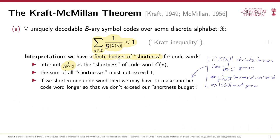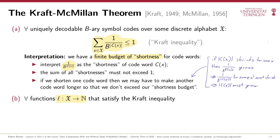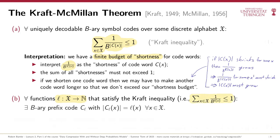Part B goes in the opposite direction. It starts from a function L that assigns target codeword lengths to each symbol in the alphabet. The statement is that as long as these target lengths satisfy the Kraft inequality, there exists a b-ary code whose codewords all have exactly the given target lengths. Moreover, we can make this code not only uniquely decodable but even prefix-free, which is a strictly stronger statement than unique decodability.